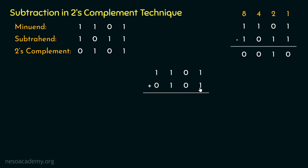Performing the addition: 1+1 = 0 with carry 1; 0+0 = 0 plus carry gives 1; 1+1 = 0 with carry 1; 1+0 plus carry 1 = 10. We again get a carry. However, since we are using the two's complement technique, this carry we simply discard.